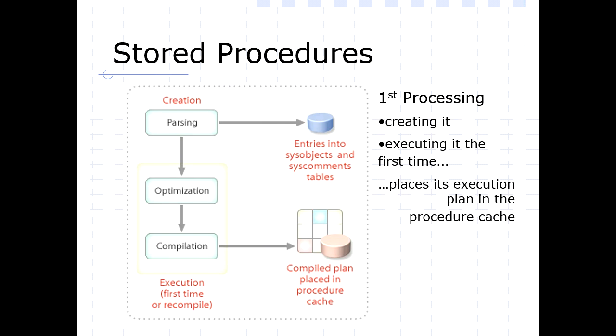How do stored procedures work? We talked about batches getting compiled into an execution plan, and stored procedures work similarly. The first time you call a stored procedure, it will parse it — checking for syntax errors — then go through an optimization process where it compiles and comes up with an execution plan, which gets stored in a procedure cache, and then it executes.